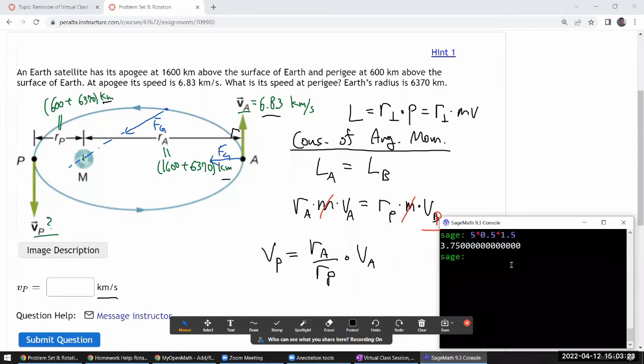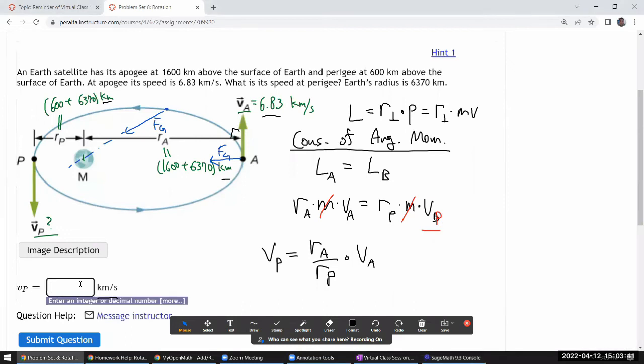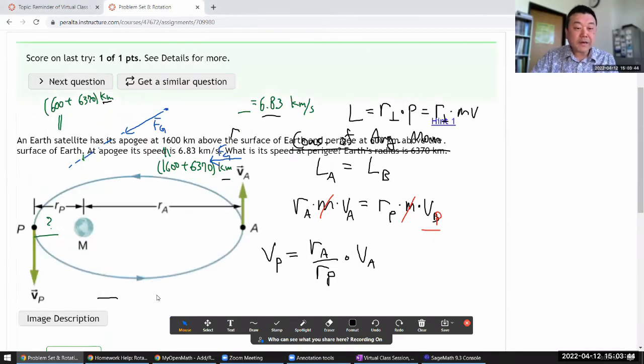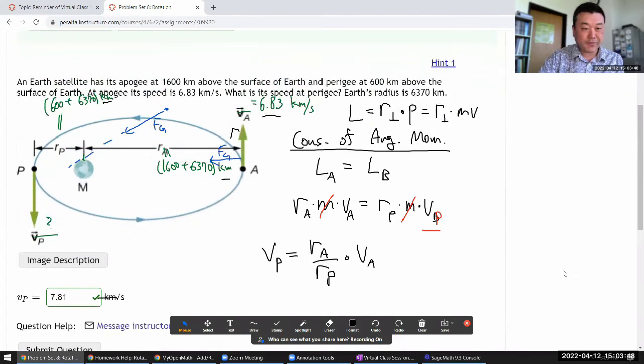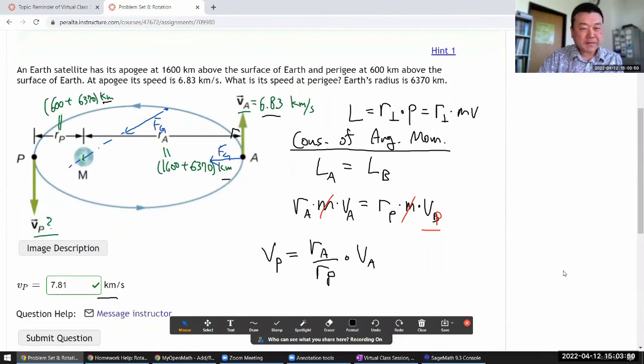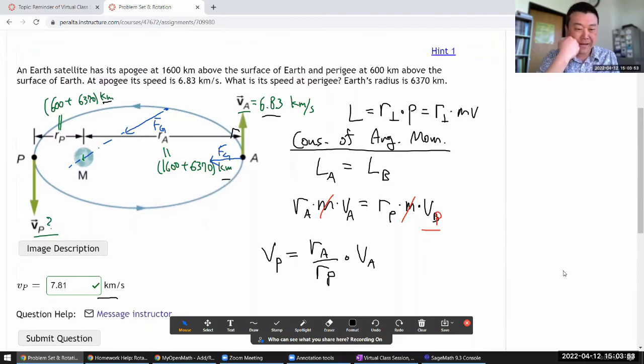So I have ra, that's 1600 plus 6370, divided by perigee distance, 600 plus 6370, times the speed at apogee, 6.83. It's a pretty simple answer: 7.81.